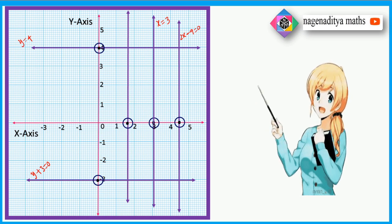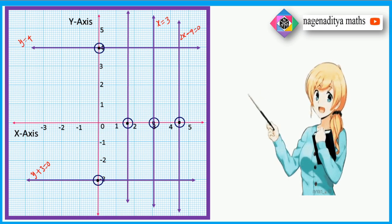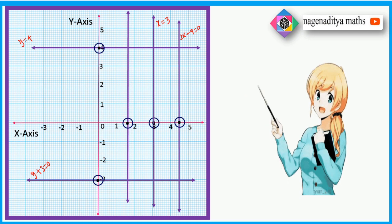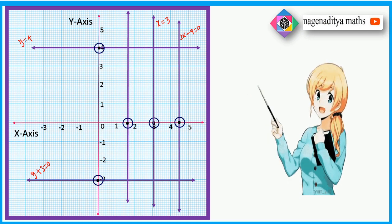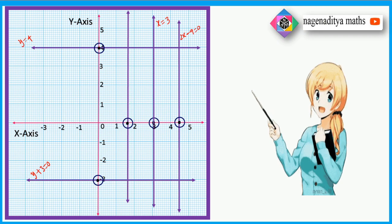So this is how we can represent the given lines on the Cartesian plane. The Cartesian plane is nothing but representing the given line on a graph paper. Thank you very much.